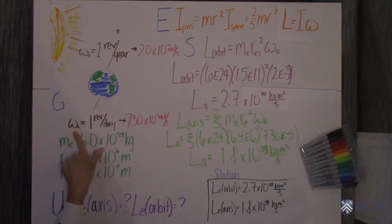And then you do the same thing with the Earth's spin on its axis, one revolution per day. That ends up being 7.3 times 10 to the negative fifth radians per second.